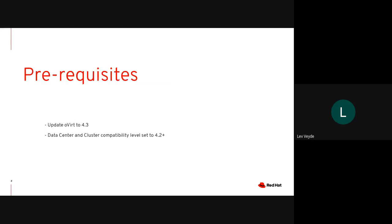In order to upgrade, you need to make sure that you have some prerequisites already in place. First, you need to update to oVirt 4.3 before you update to 4.4. This is important because you can't update directly from, for example, oVirt 4.1 to 4.4. You need to first update to 4.3 and only then upgrade to 4.4.